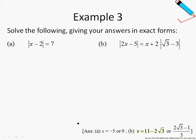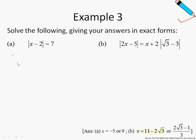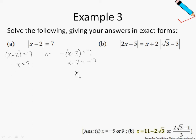Let's move on to Example 3, where we solve some simple equations. For modulus equations, we will have two expressions to solve. For the first equation, to remove the modulus sign we break it into two cases: x minus 2 equals 7, or negative of (x minus 2) equals 7. In the first case, x equals 9. In the second case, multiplying both sides by negative 1 gives x equals negative 5. So for Example 3A, the answer is x equals negative 5 or 9.